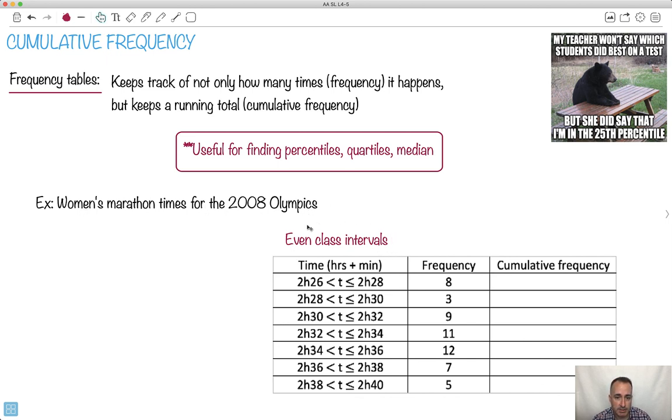The IB says that we're supposed to be using even class intervals in order to do this. I think I've got an example below that has one of them that's uneven just to play around with that, but they're usually going to be even. So you notice like 2 hours 26 until 2 hours 28, and then 28 to 30. So there's always the same interval here.